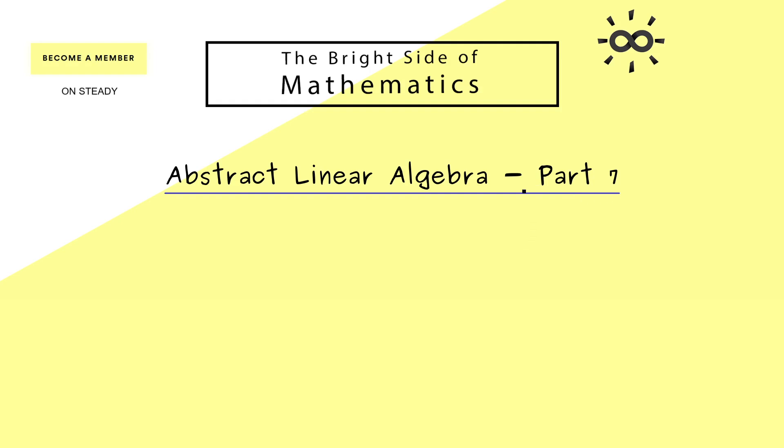We already know that we can use the so-called basis isomorphism to translate between a general vector space and a very concrete one. And now we will talk about what happens when we choose a different basis.